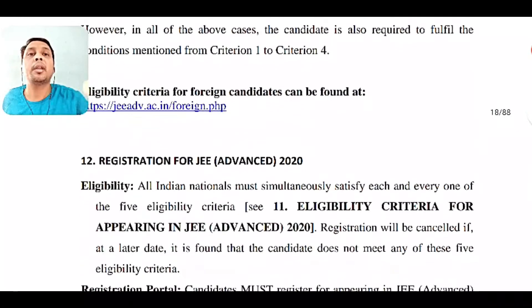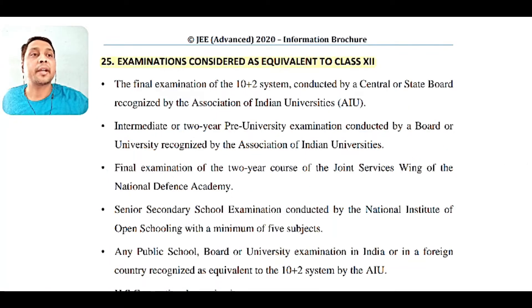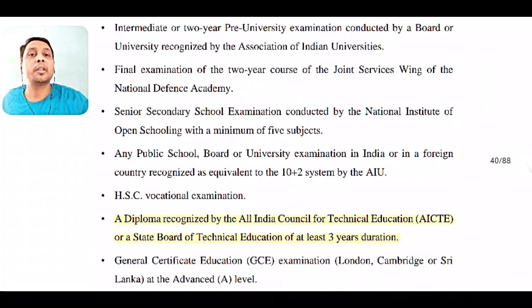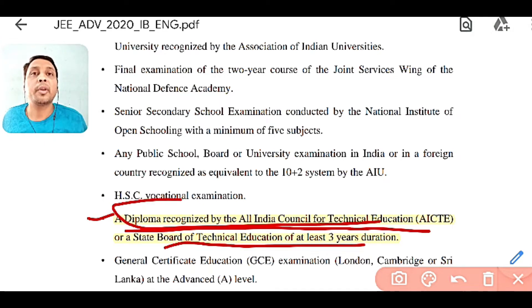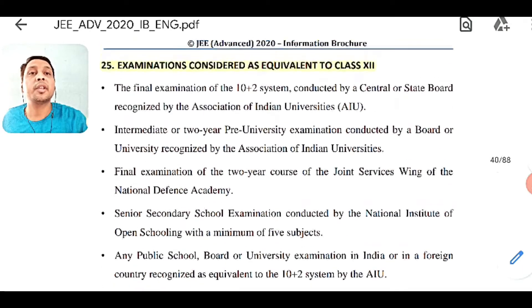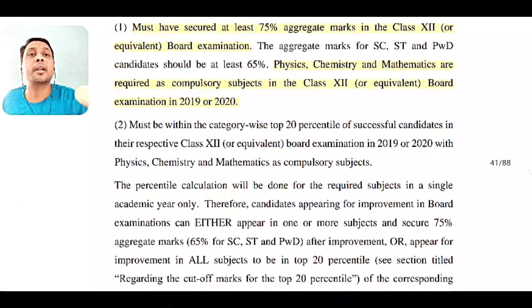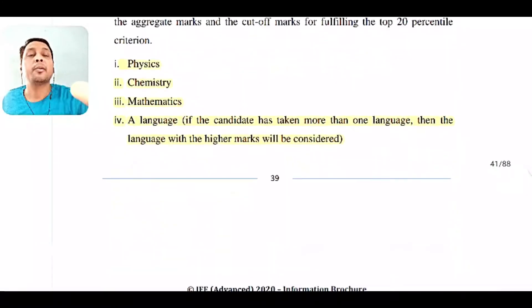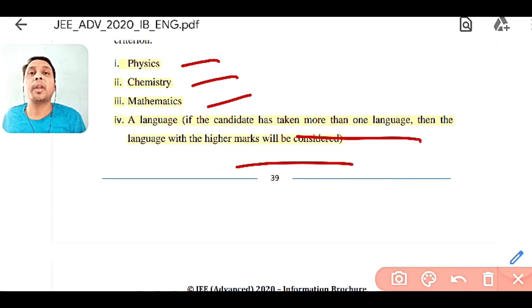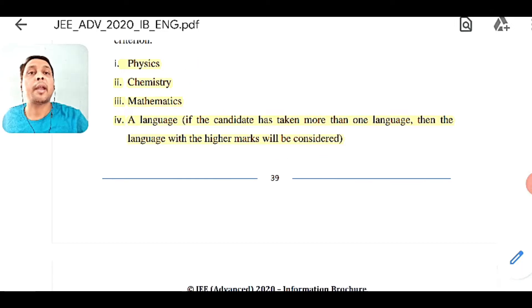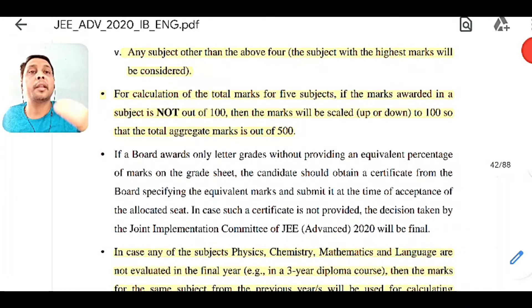Criteria 5 means those who have already got into IIT in the previous year's exam will not be able to sit again. Now, looking at exams considered equivalent to class 12 — you can see that a diploma recognized by AICTE is listed, so your diploma is obviously recognized by AICTE and you can easily apply for JEE Advanced as well. Now, here you can see how the 75% is calculated: all Physics, Chemistry, and required subjects for the 11–12 board exam are considered. In case of diploma, five subjects are considered — and if marks are not out of 100, they will be scaled up to 100.